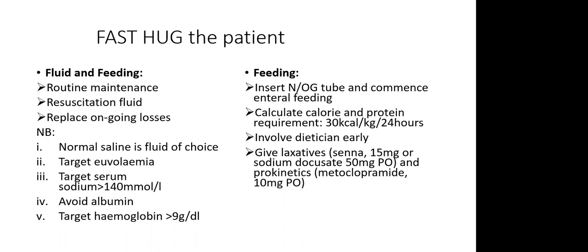Target haemoglobin between 9–10 g/dL. For head injury patients, we do not use restrictive blood transfusion. For chronic ICU patients, we allow Hb between 7–8 g/dL when there is no ongoing blood loss, because at that haemoglobin level the oxygen extraction ratio is said to be at its maximum. Also want to avoid the sequelae of blood transfusion.